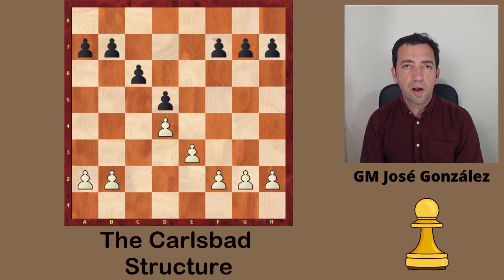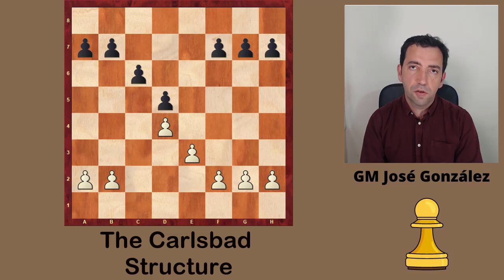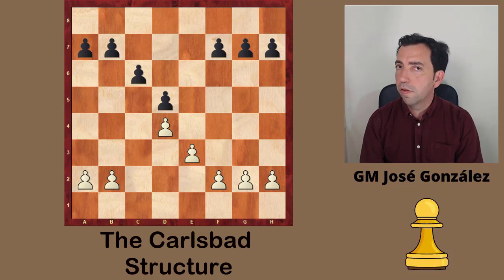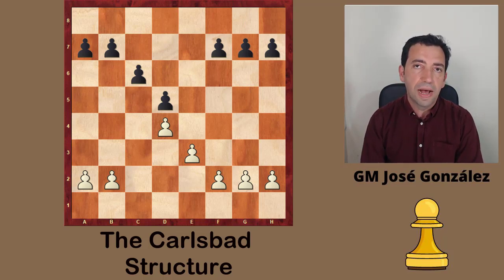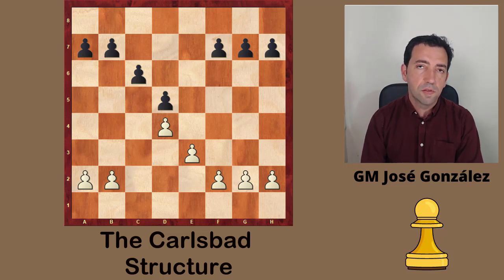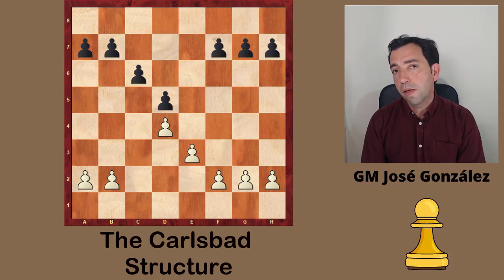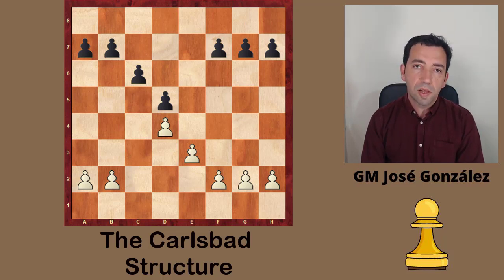Lately we've been hearing a lot about the Carlsberg Pawn structure, and it's no surprise as Dean Glieren has been scoring heavily with it. He's made 2.5 points out of 3, and this classical structure is becoming Ian Nepomniachtchi's nightmare. In this video I'm going to go through the ins and outs of this classical variation that mainly occurs from the Queen's Gambit Declined, but can also occur from a number of other opening lines, especially the London System and the Caro-Kann Exchange variation.